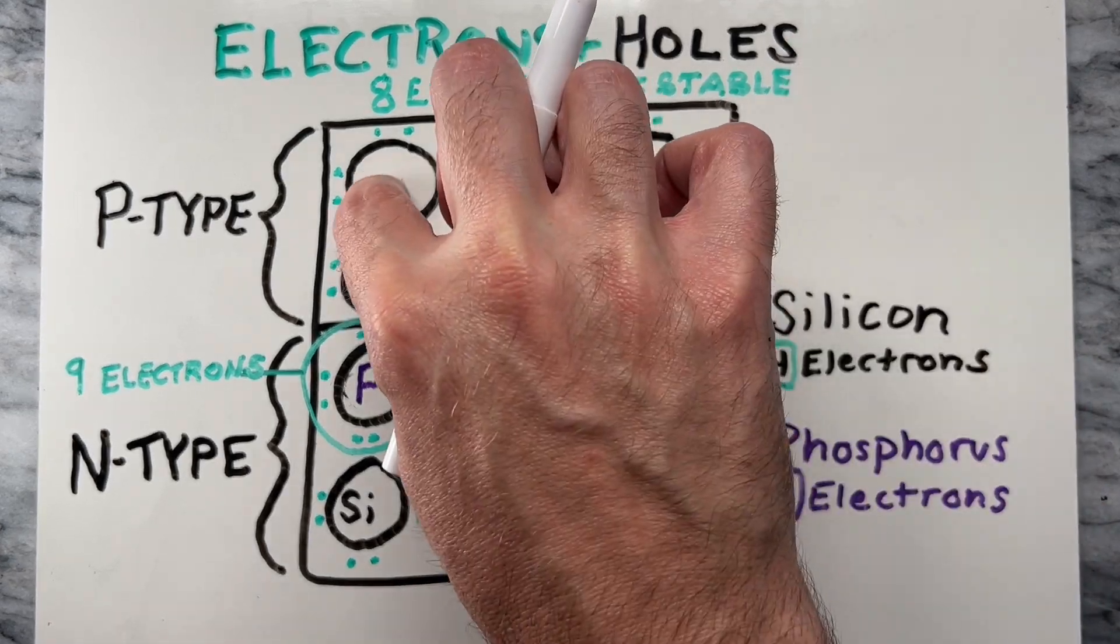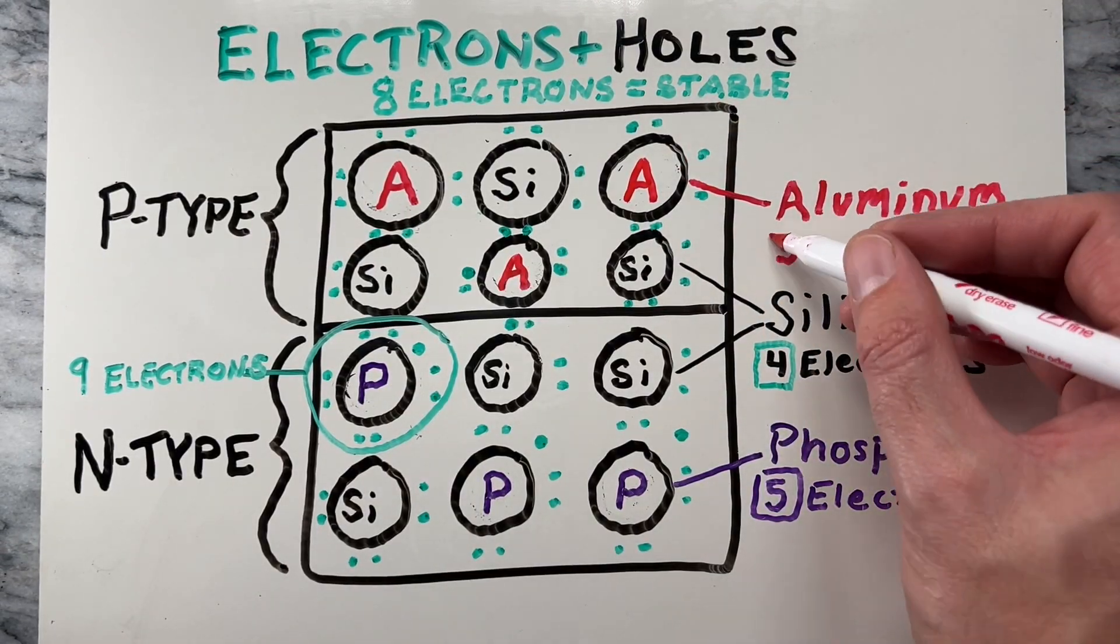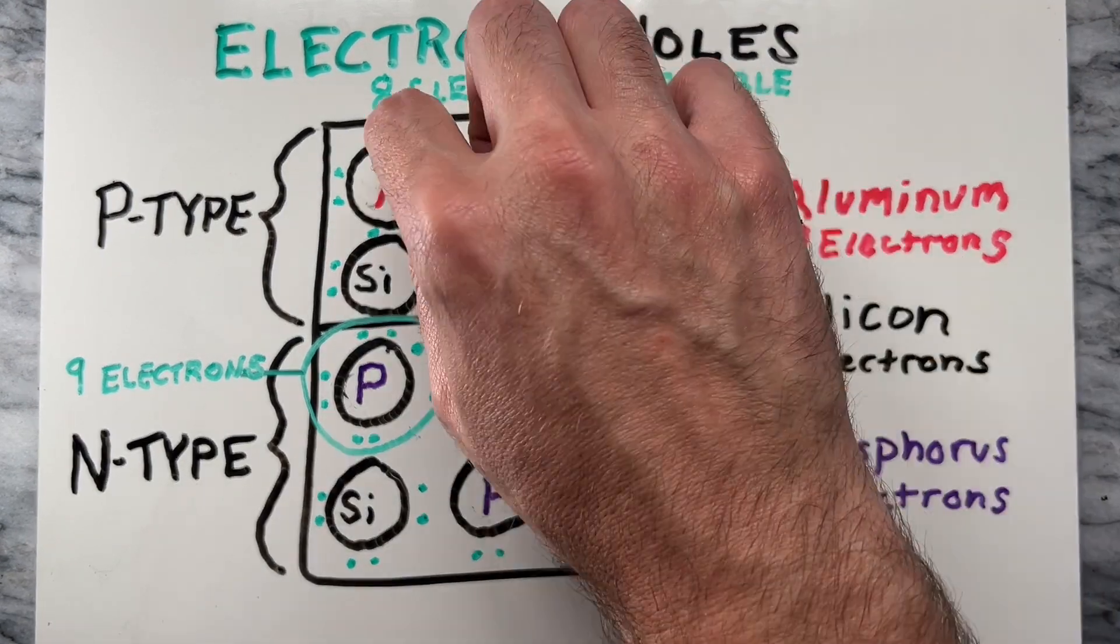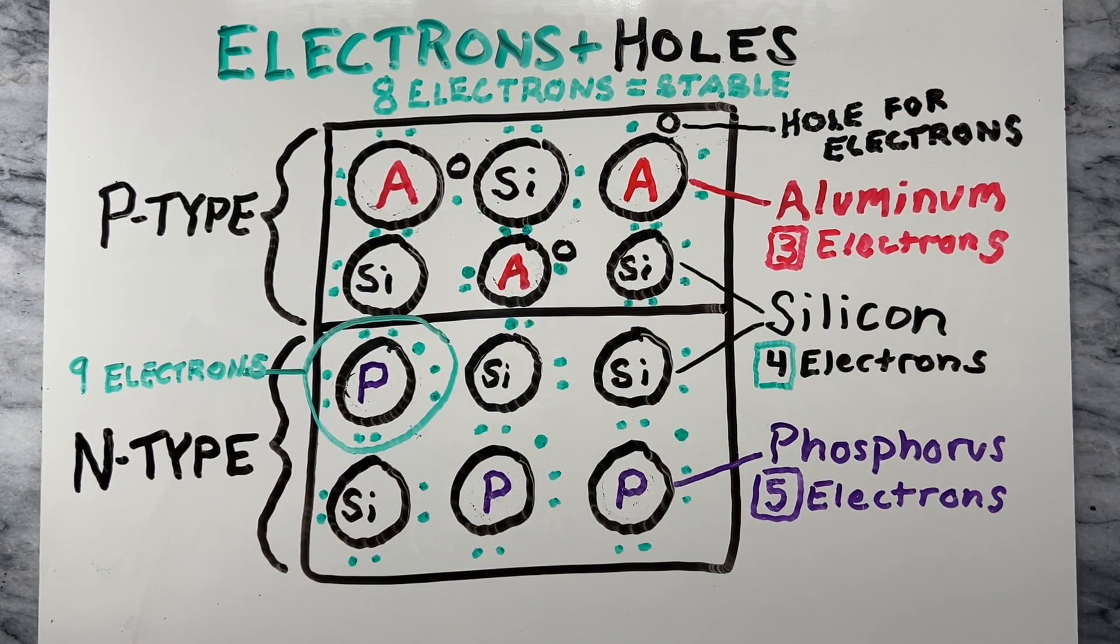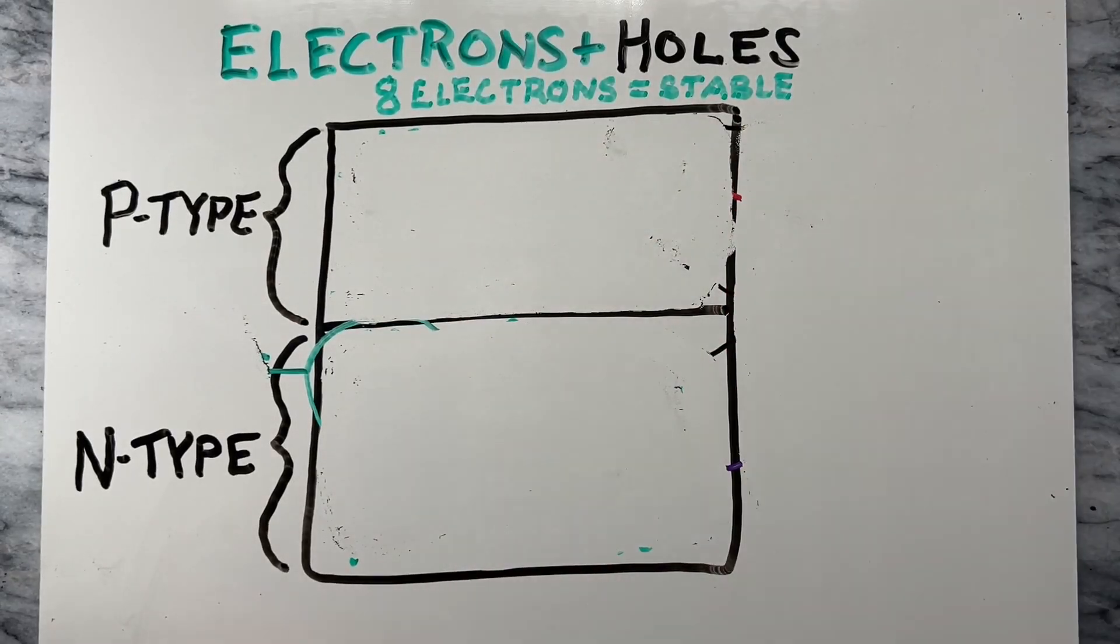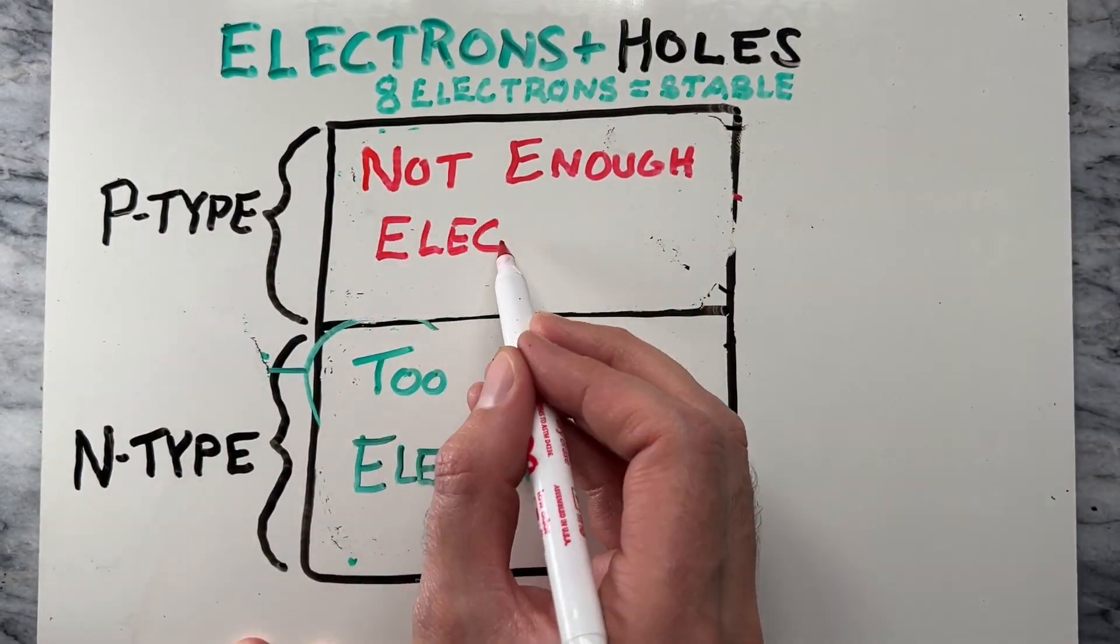The P-type layer can have some aluminum added, which only has 3 electrons. So there's a hole where the electron can move to. So basically now, there's a layer with too many electrons, and a layer with not enough electrons.